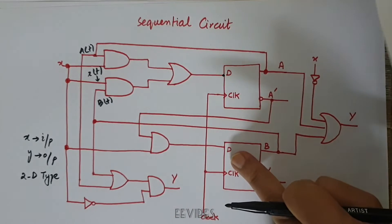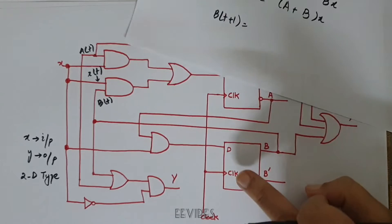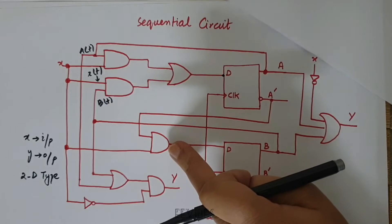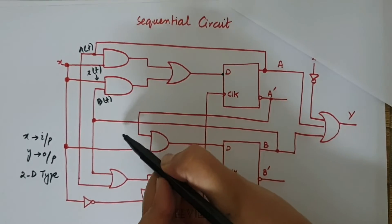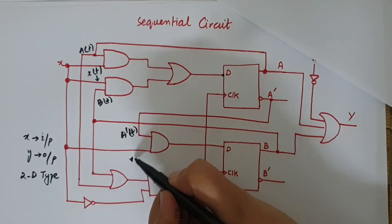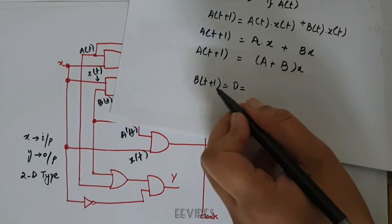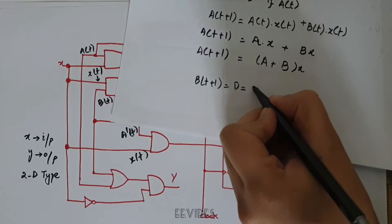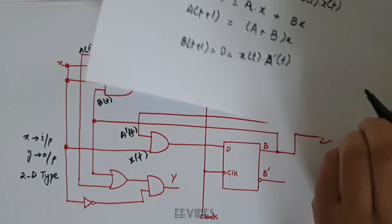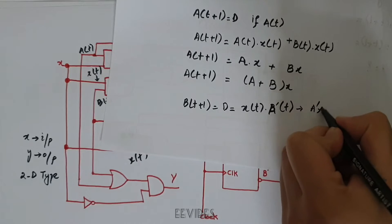For determining the next state of the second flip-flop, B(t+1), it is again equal to its D input. The D input is generated from an AND gate whose first input is A complement of t and second input is X(t). So we can write B(t+1) = X(t)·A'(t), or simply B(t+1) = A'·X.